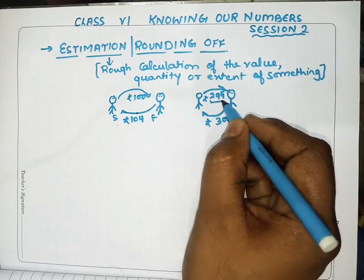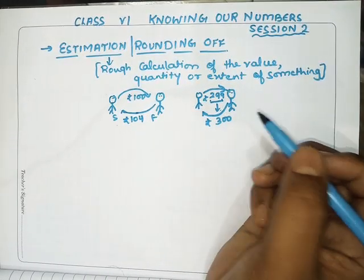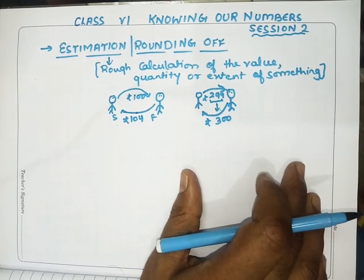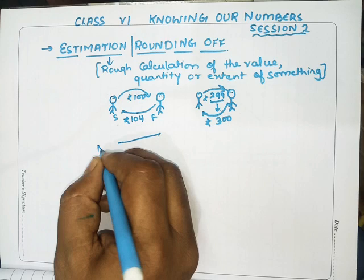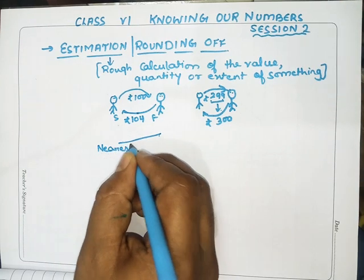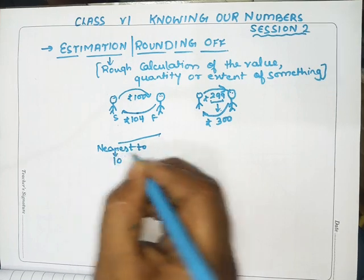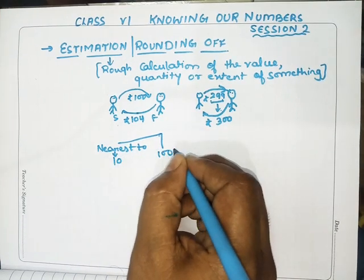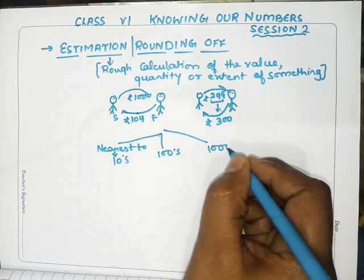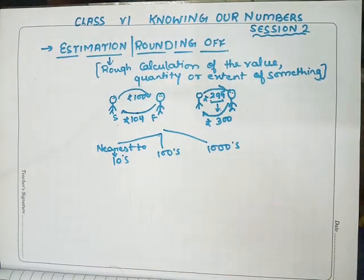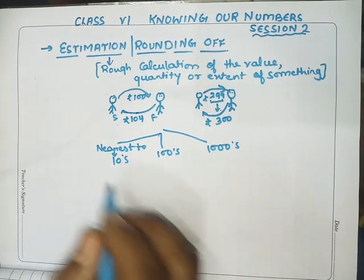Now I will explain rounding to the nearest 10, nearest 100, nearest 1000. We will cover rounding to the tens place, hundreds place, and thousands place, with examples for each.